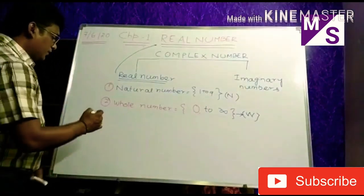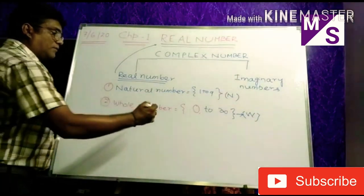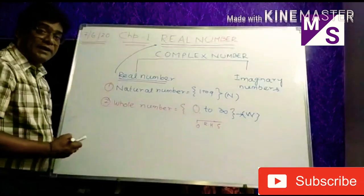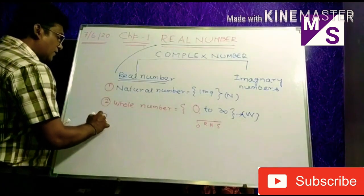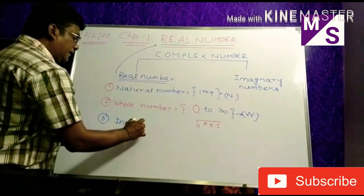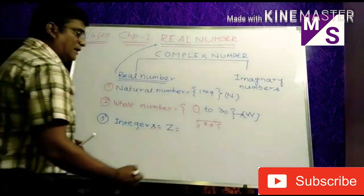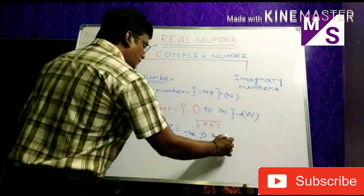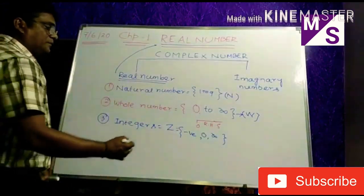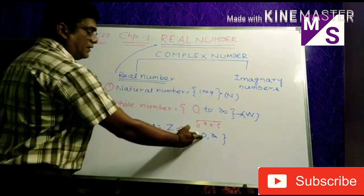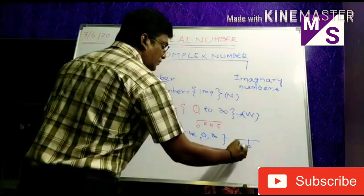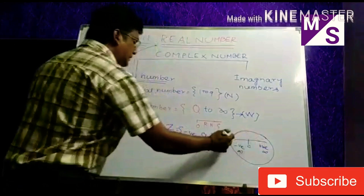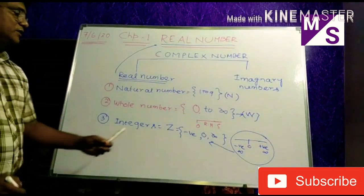After zero on the right-hand side, they started to think about the left-hand side of zero. Then they got the integers, denoted by Z. These integers range from negative infinity through zero up to positive infinity. So this whole range is coming under the set of integers, which is denoted by the letter Z.